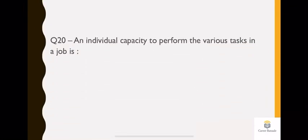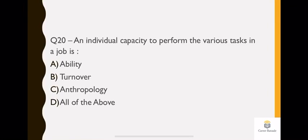Our last question of the day: an individual's capacity to perform various tasks in a job is known as what? For example, if you are an HR, you do recruitment, administration, training and development, skill development maybe. What do we say? That is actually what we call your ability. It has nothing to do with turnover. It has nothing to do with anthropology. And all of the above definitely can't be it.